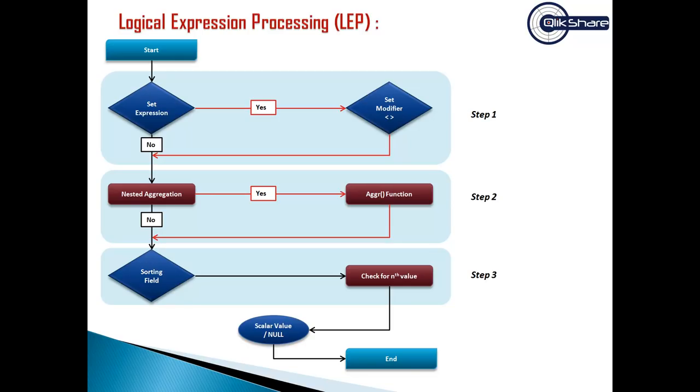What happens if you're using this expression? The evaluation process starts here. This is the first step - it checks if there is a set expression. If there is a set expression, it looks for the set modifier, modifies the set, picks up the subset of data, and passes it back as output one to step two. If there's no set expression, it jumps to step two.